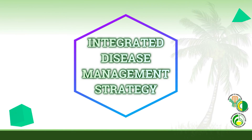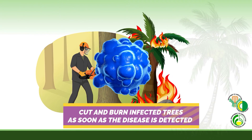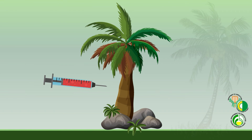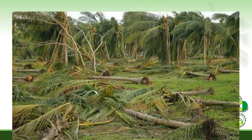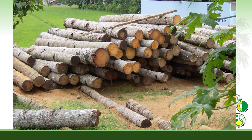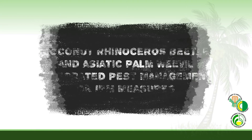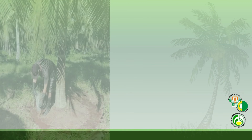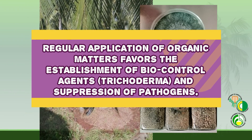Integrated Disease Management Strategy: Coconut fields should be kept clean. Cut and burn infected trees as soon as the disease is detected to avoid further spread. Apply trunk injection or spraying with fungicide to surrounding palms within a 20-meter radius of the infected palm. For felled coconuts, logs must be disposed of properly to prevent coconut rhinoceros beetle and Asiatic palm weevil infestation. In case of infestation, integrated pest management (IPM) measures must be adopted. Regular application of organic matter favors the establishment of biocontrol agents and suppression of pathogens.